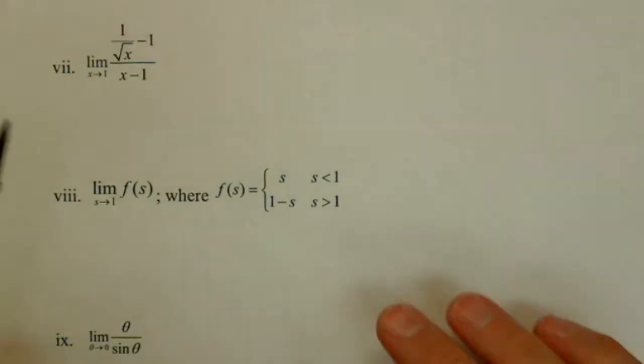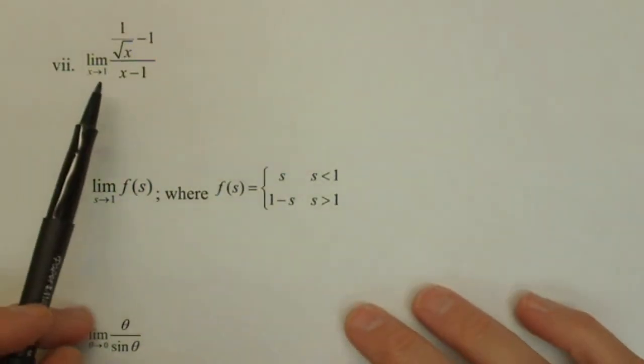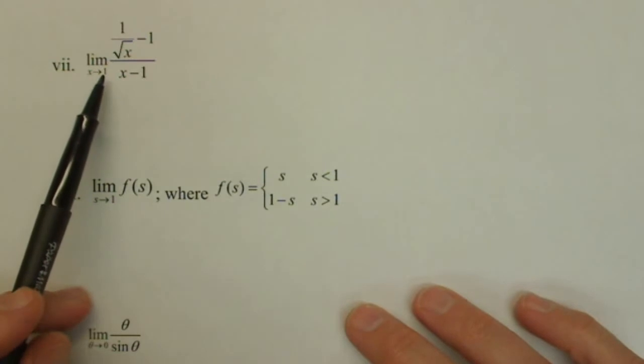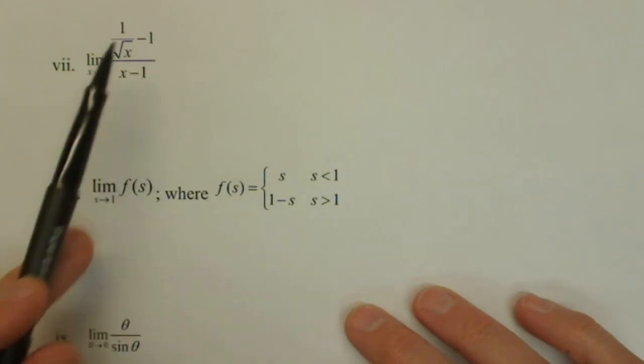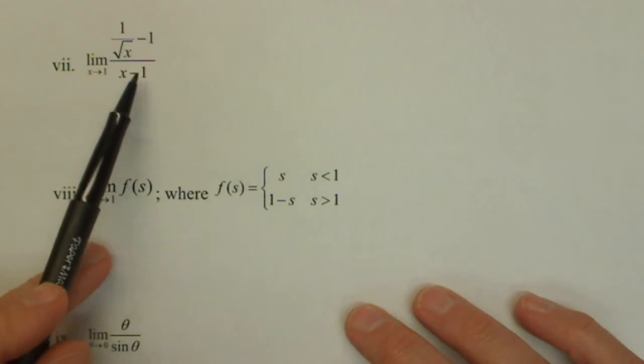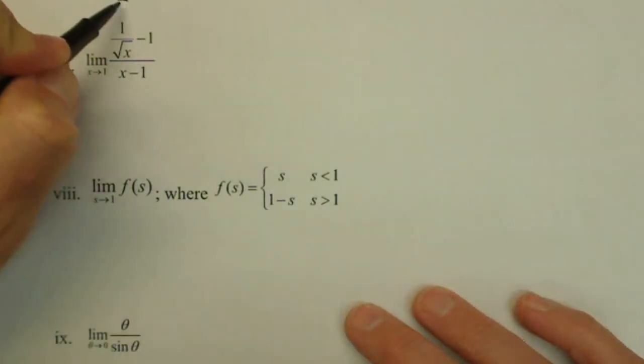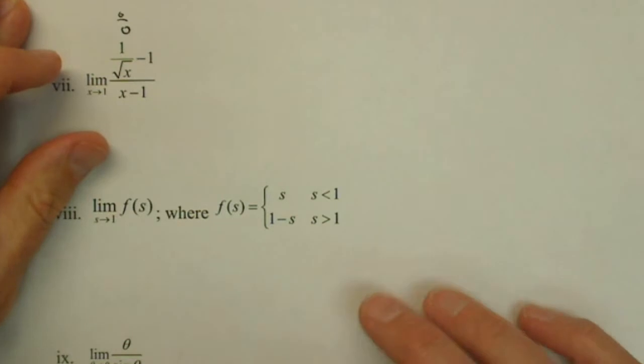So we're going to calculate a few more limits here. First one, notice what happens if I do direct substitution. If I plug one in for the x's, I'll get 1 over 1 minus 1, which is 0, over 1 minus 1, which is 0. So I have a 0 over 0 case, which is our indeterminate form.